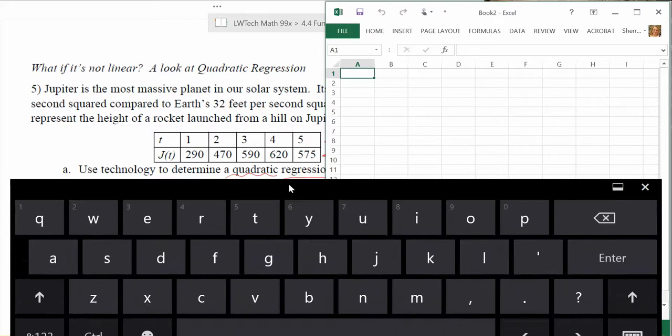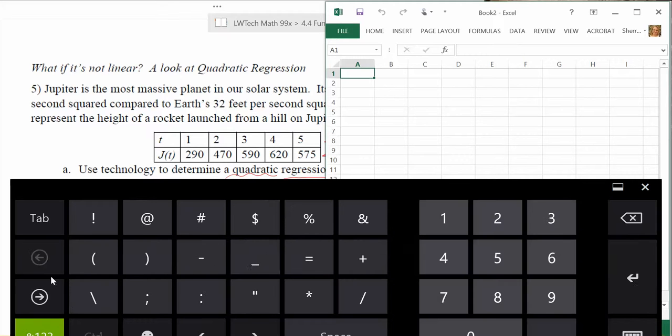For our times, our inputs, they are fairly simple here: one, two, three, four, and five seconds that we've been making measurements. Next we want to go to column B and enter the different heights. We go up to 620 and then back down to 575 at the five second mark.